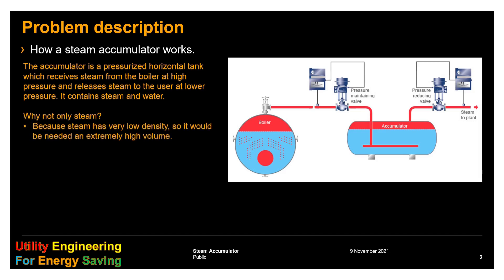Why not only steam? Because steam has very low density, and so it would need an extremely high volume. Let's make an example. The boiler supply pressure is 20 bar gauge, and the user requires 12 bar. If the peak is 200 kg of steam above boiler capacity...